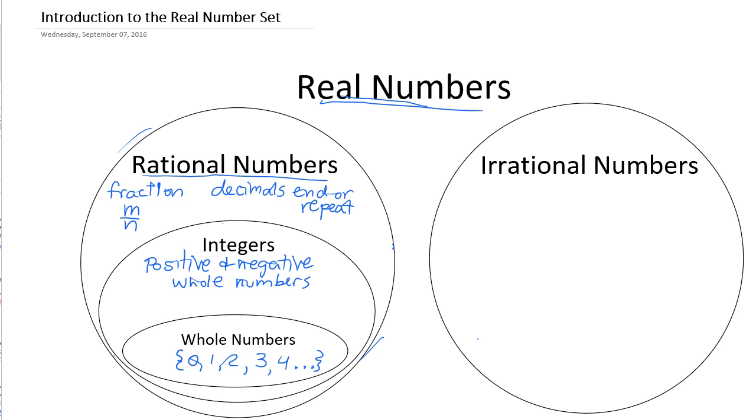Now, if we look at the other part of the real numbers, it's our irrational numbers. We were introduced to those the other day, and these numbers are the opposite of rational numbers. So you cannot write them as a fraction, M over N. If you try to write them as decimals, they do not end, and they do not repeat.